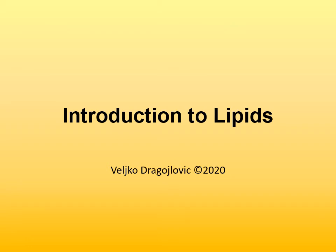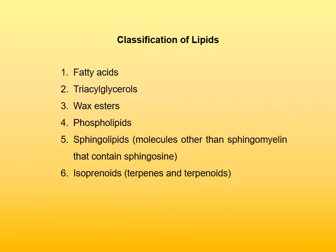This chapter is an introduction to lipids. Historically, lipids have been defined as naturally occurring substances that are soluble in non-polar solvents — typically hexane — and insoluble in water. This is actually an operational rather than structural definition, so lipids have been defined based on their properties and not on their structure.